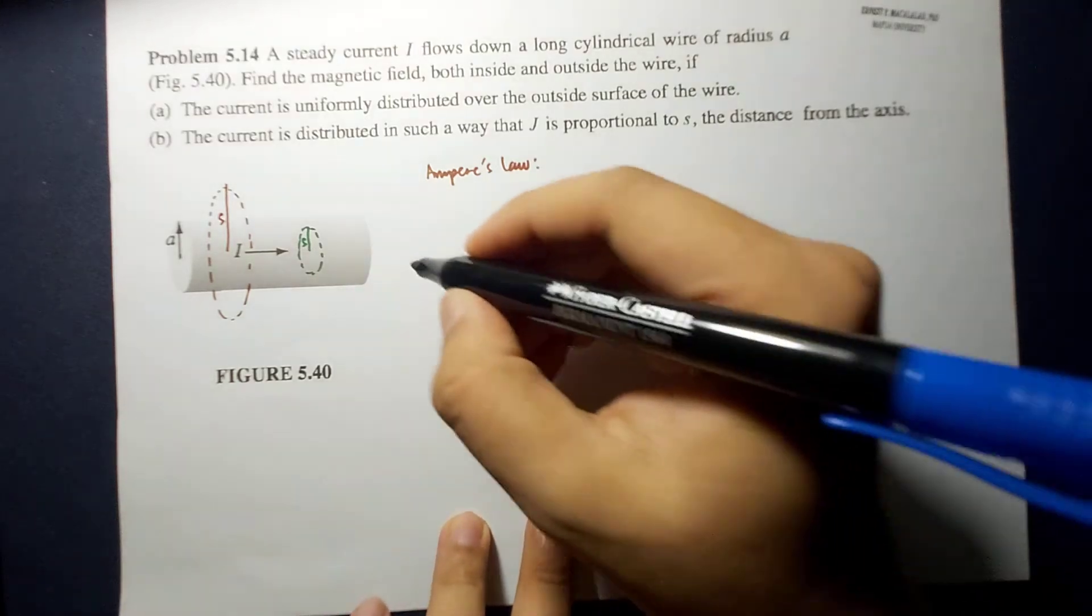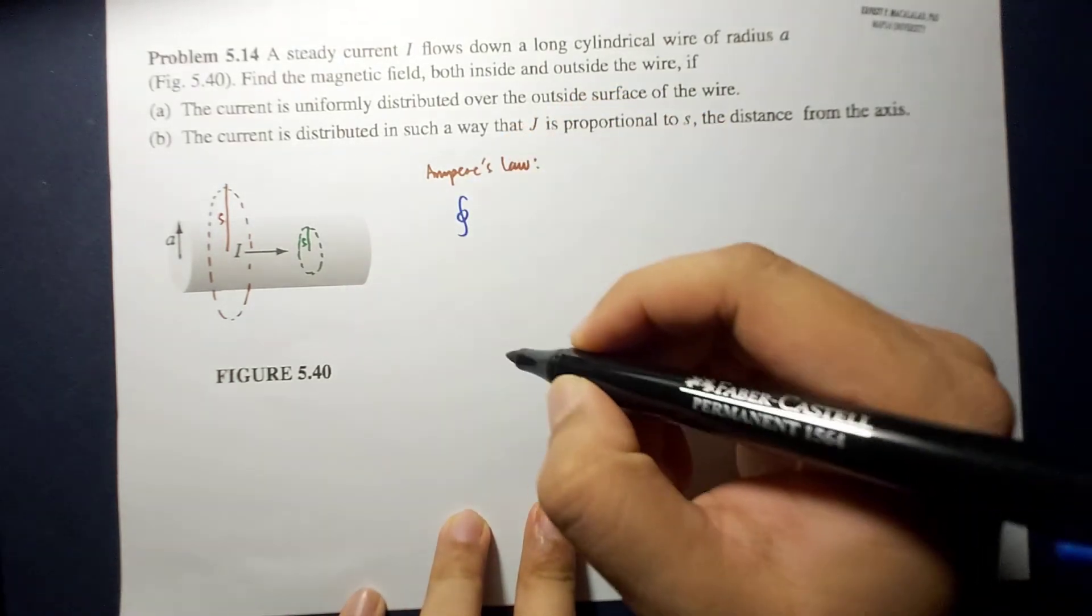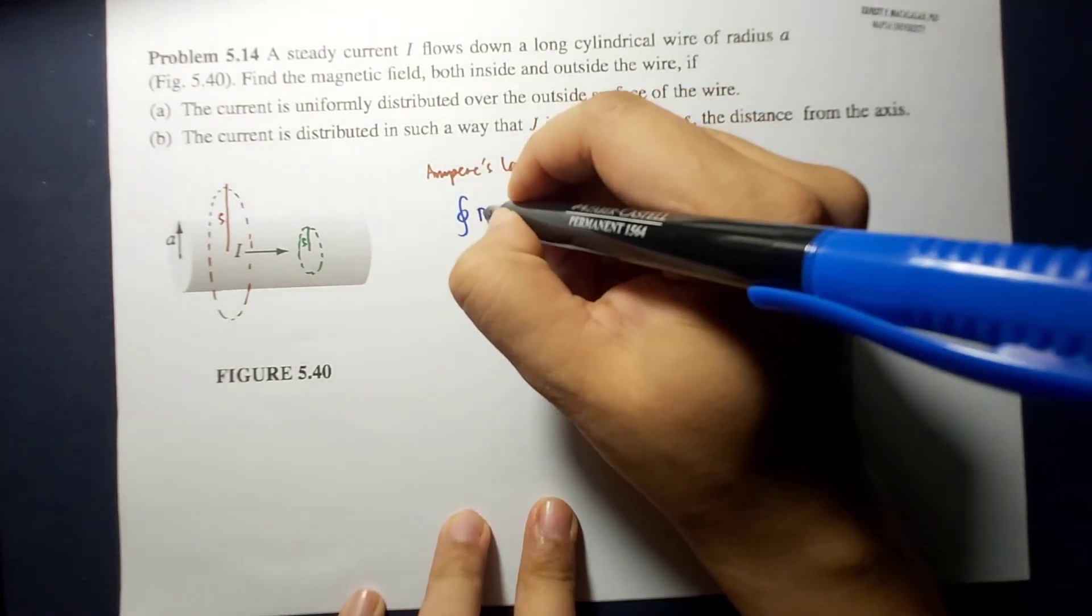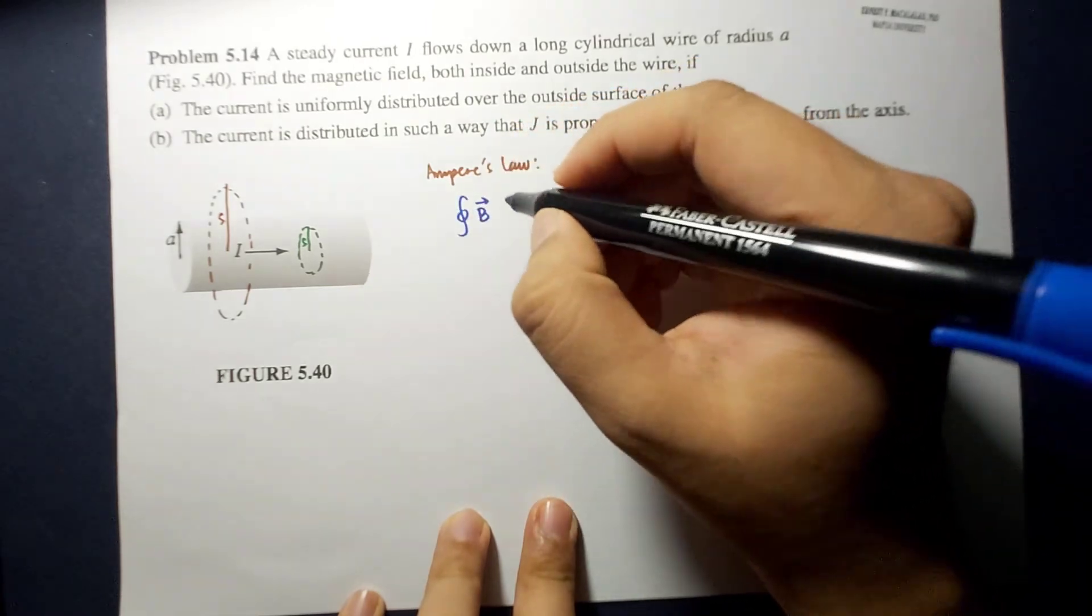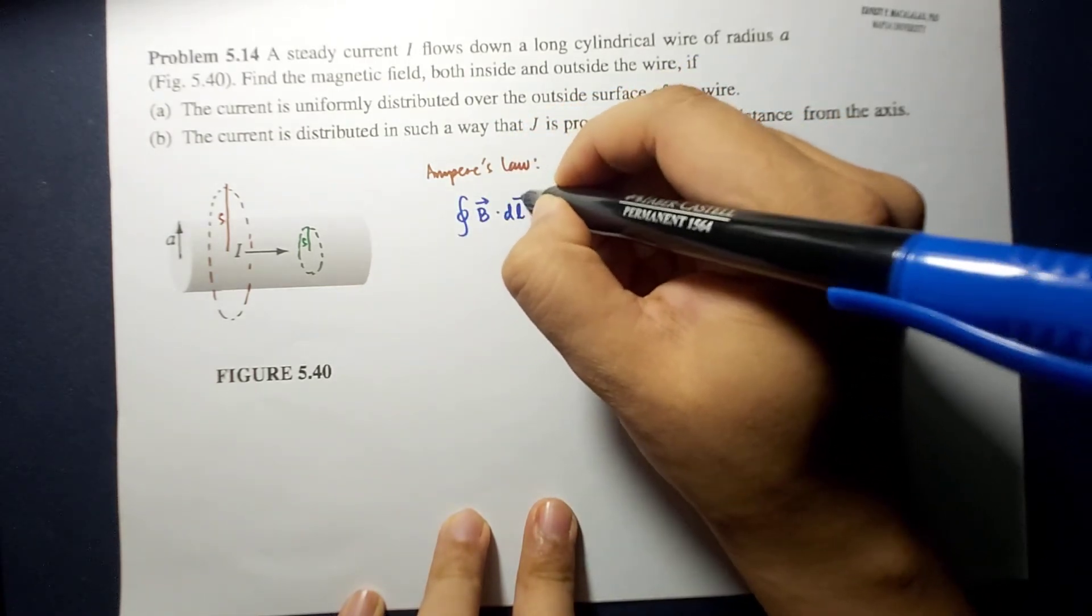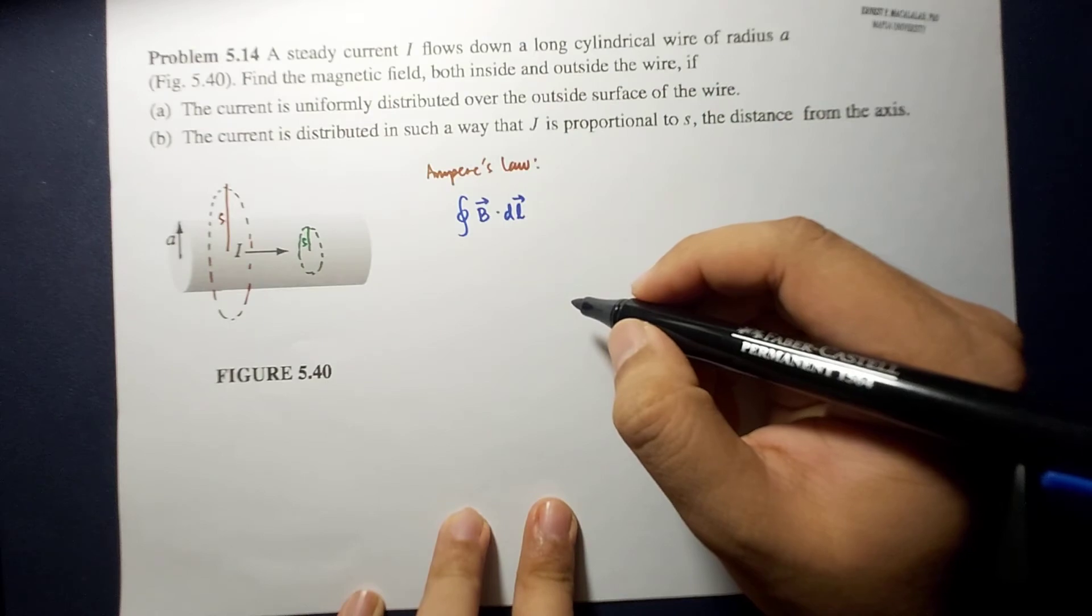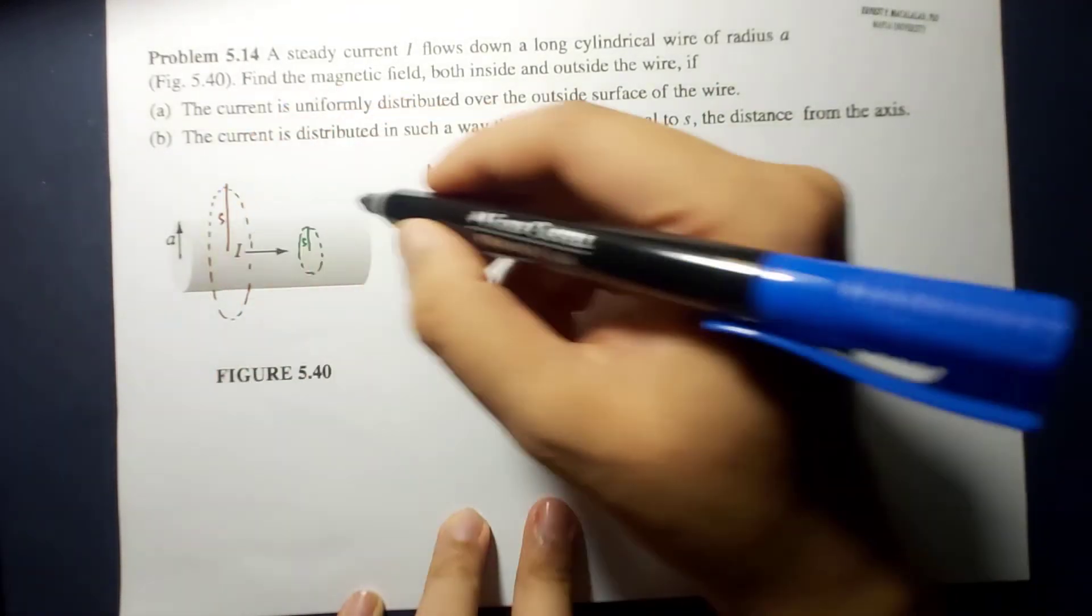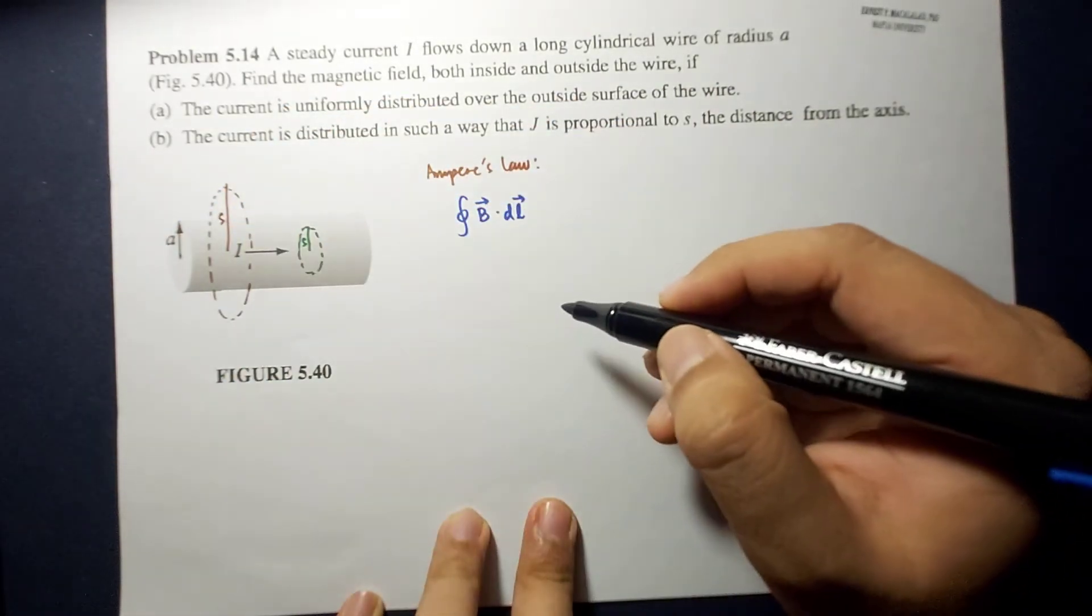is determined by getting the magnetic flux. So, the magnetic flux will now be equal to the closed integral of B dot Dn. Because the Amperian loop is symmetrical to your magnetic field.